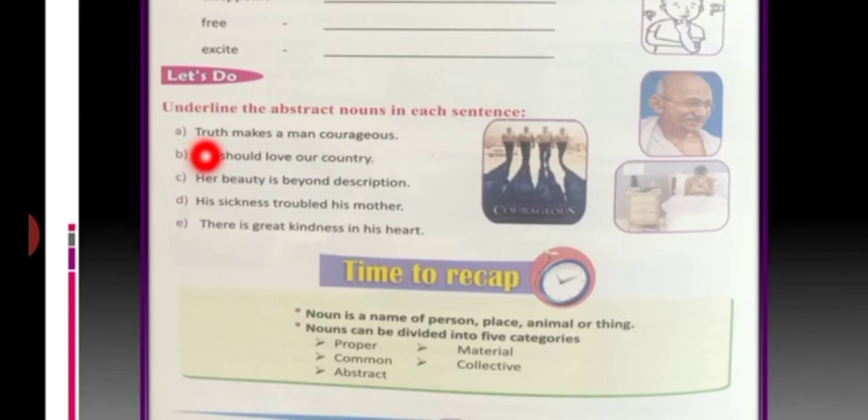What you can see here, we cannot see truth. So, truth is the abstract noun. We should love our country. Love, underline this. Her beauty is beyond description. Beauty, underline.